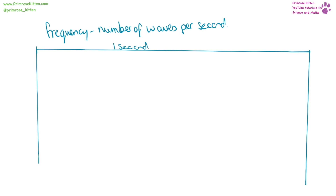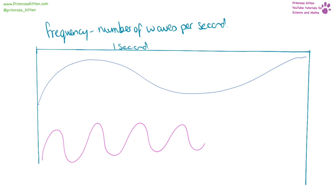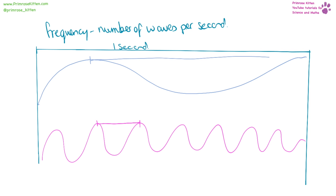Frequency is the number of waves per second. So if we look at this block here as a second in time, something that has a low frequency means we are not going to see many peaks in one second. But something that has a high frequency means we would see lots of peaks, or lots of waves, within one second. You'll notice that for the high frequency one it has a low wavelength, whereas for the low frequency one it has a high or long wavelength.